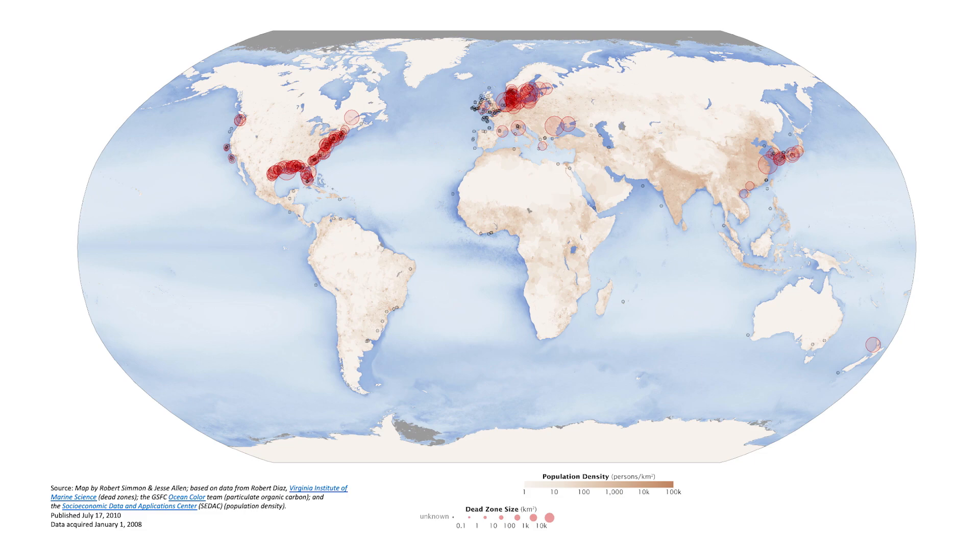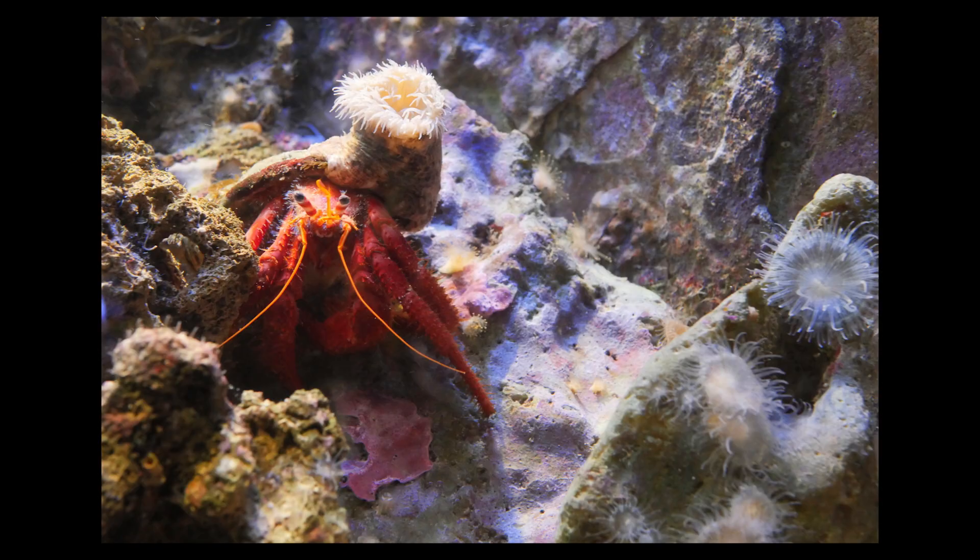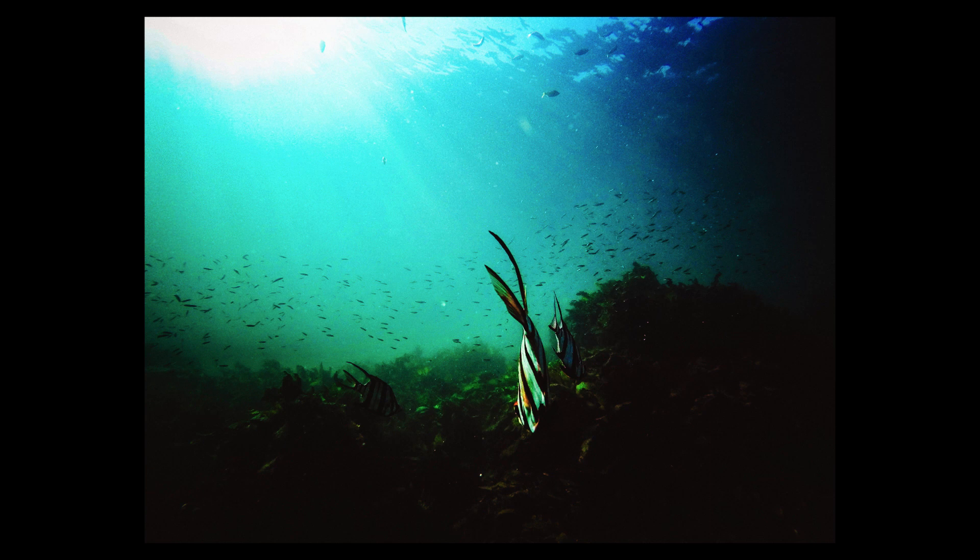These oceanic Dead Zones have quadrupled in size since 1950 and have increased tenfold in coastal areas. We've already lost 77 billion tons of oxygen in our oceans. When water loses oxygen, organisms suffocate, just like humans would if our atmosphere suddenly lost all of its oxygen. In these Dead Zones, most marine organisms can't survive. Some fish have adapted to be able to swim away, but many organisms don't have that luxury. Slow-moving organisms, organisms at the bottom of the sea floor, and many larvae are organisms that can't swim away when Dead Zones set in.